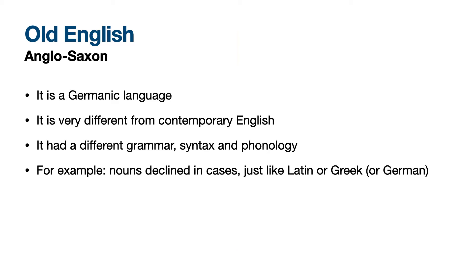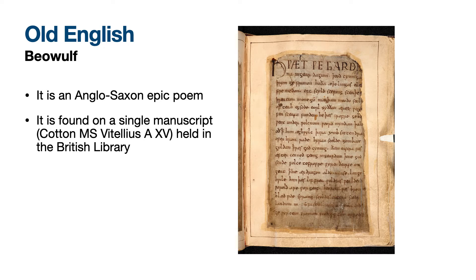So let's have a look at Beowulf. Here you see a page of the manuscript where Beowulf was found. We found Beowulf in just one manuscript — it is an Anglo-Saxon epic poem found on a single manuscript, the Cotton MS Vitellius A15, and you can see it in the British Library. If you just look at that, you see that some characters are very different from the ones you normally read in English.